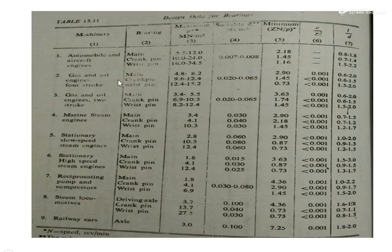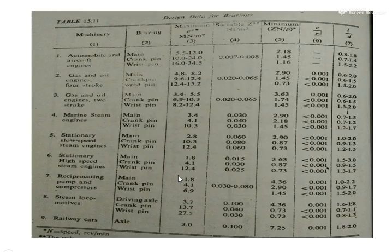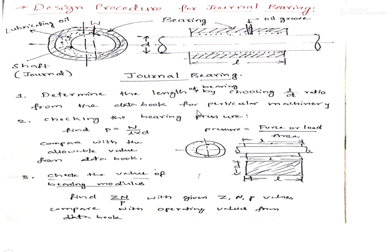The data book table lists machinery type and corresponding L/D ratios. Take the L/D ratio for the given application and calculate the bearing length. The next step is to compare the calculated pressure against allowable values given in the data book's third column. Calculate the pressure using the given values of load, L, and D, and compare with the allowable value. The calculated pressure should be less than the allowable value; otherwise, increase the dimensions.